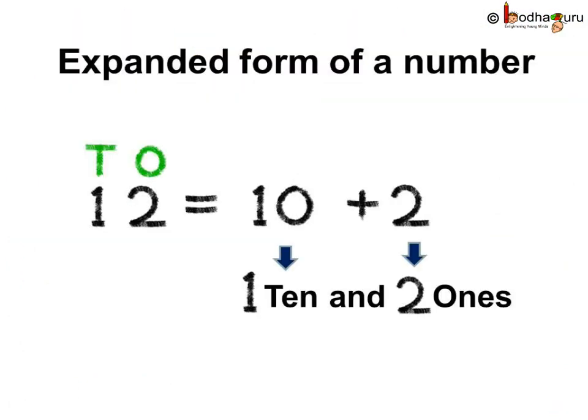Writing a number like this is called expanded form of a number. The expanded form of a number is the sum of the place value of its digits. That is, a number is made of how many hundreds, tens, ones, etc.